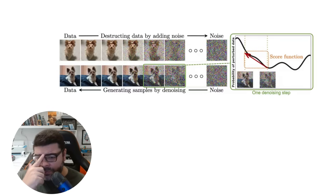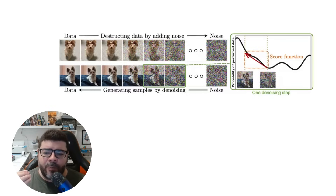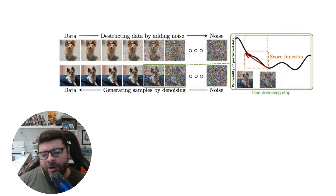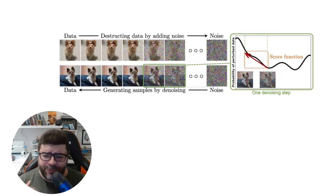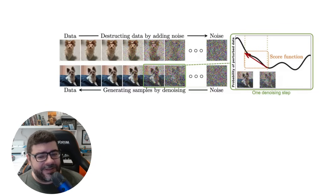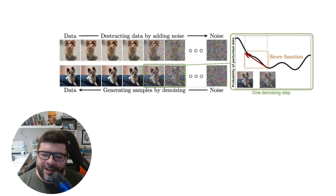Diffusion models work from a single premise: you include noise in the image, and after that, remove the noise — or you add noise to the image, destructing and destroying data. This is interesting because it may not seem logical: you destroy data in order to create data. First you destroy data, and after that you generate new data from the data that you destroyed.